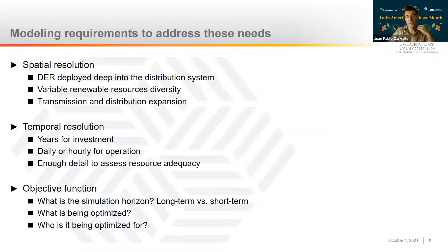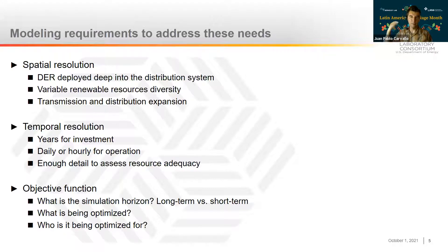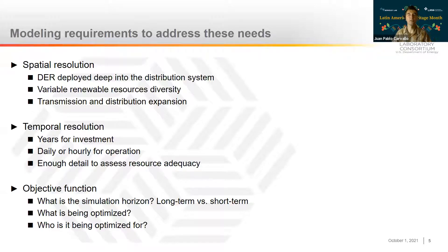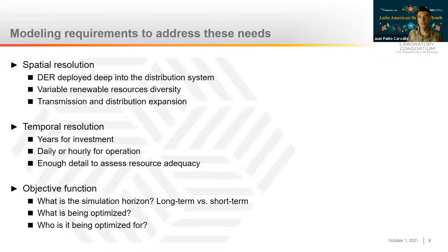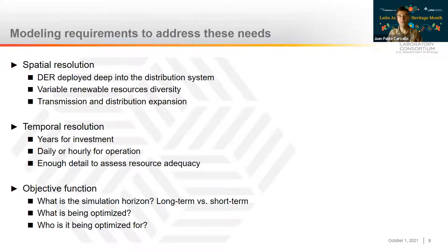As we move forward with analyzing distributed resources — particularly those of a renewable nature like solar PV — there are spatial and temporal resolution aspects that become increasingly important. Spatially, as was shown very clearly, the distribution system is massive and vast. DERs are typically deployed deep into distribution systems, so to understand their impacts clearly, models need enough spatial resolution to identify almost at the customer level, or at least at the transformer level, what's going on. It's important to represent resource diversity — if you aggregate spatial geographic zones, you lose substantial resource diversity that can come up due to shading or particular intra-urban radiation patterns.